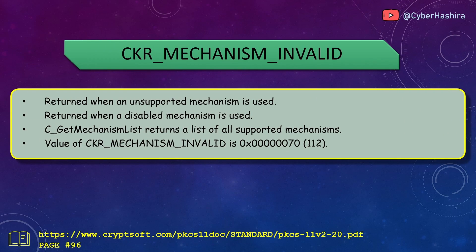CKR_MECHANISM_INVALID simply means the mechanism being used is either not supported, disabled, or does not exist. Whenever possible, try using C_GetMechanismList to get the list of all mechanisms supported by a token. Its value is 70 and is on page 96.